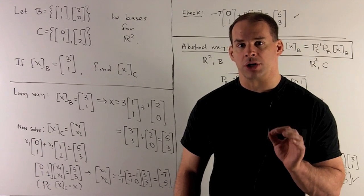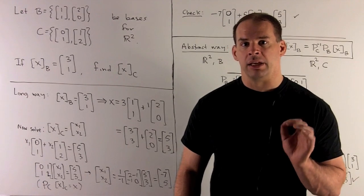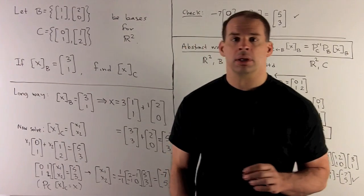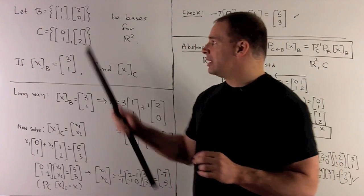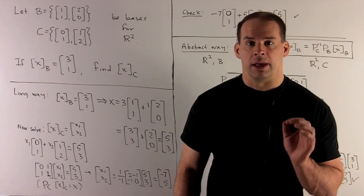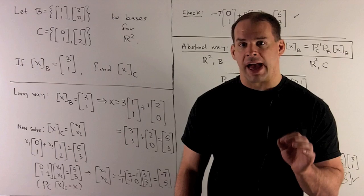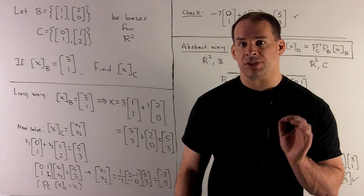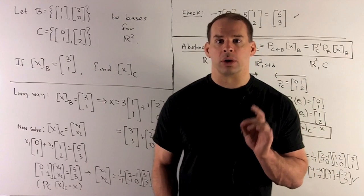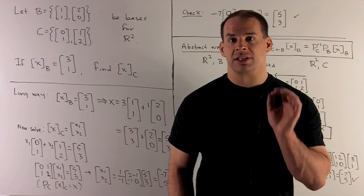Consider the following basis for R2. We have B equal to {[1,1], [3,4]}, and we'll have C equal to {[0,1], [1,2]}. If the coordinate vector for X with respect to B is equal to [3,1], find the coordinate vector for X with respect to C.